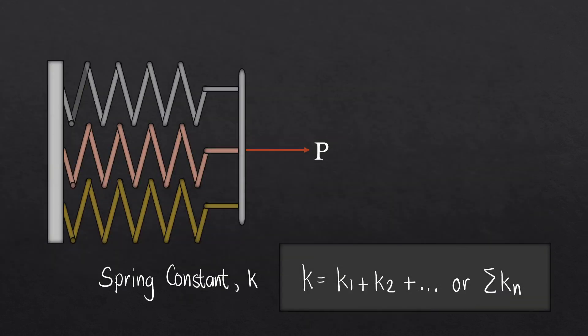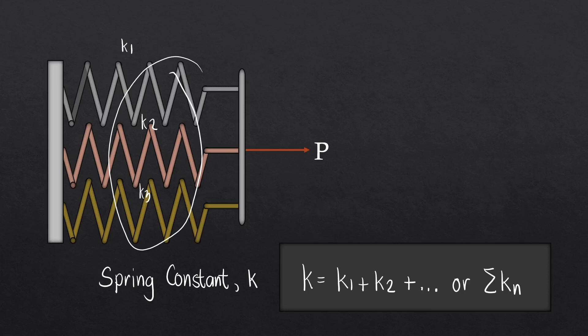This configuration shows 3 different springs laid in a parallel connection. In this case, the spring constant will be the total of all individual spring constants. So if this is k1, this is k2, and this is k3, then the effective or equivalent spring constant will be k equals k1 plus k2 plus k3, or simply the summation of k sub n.